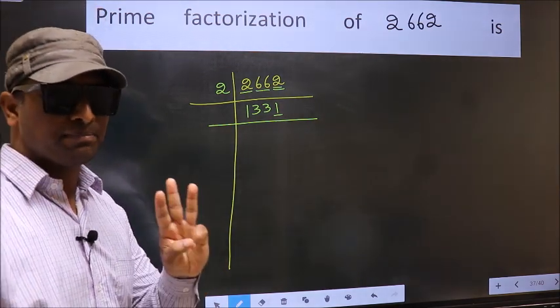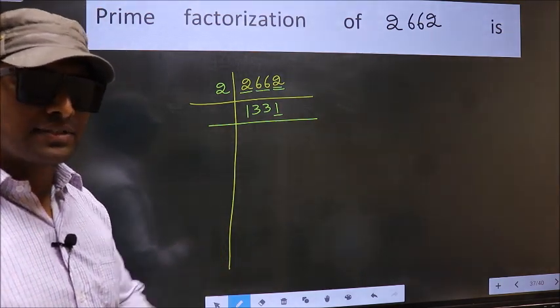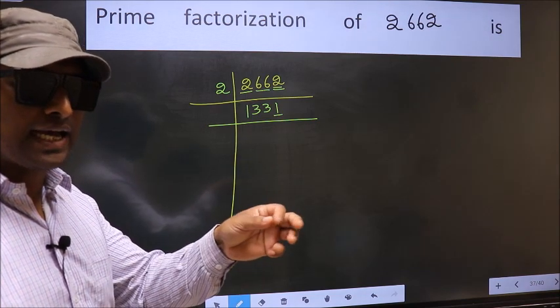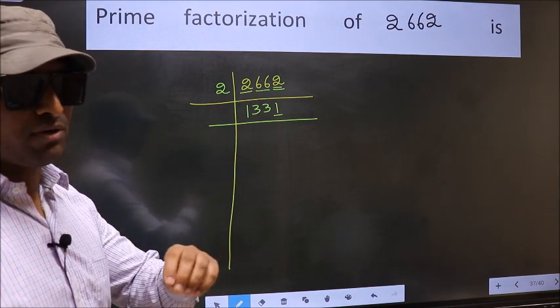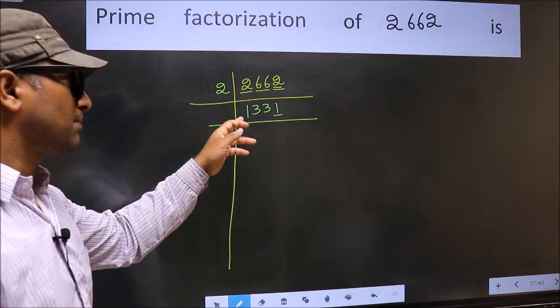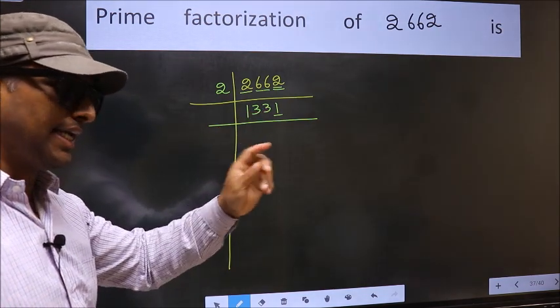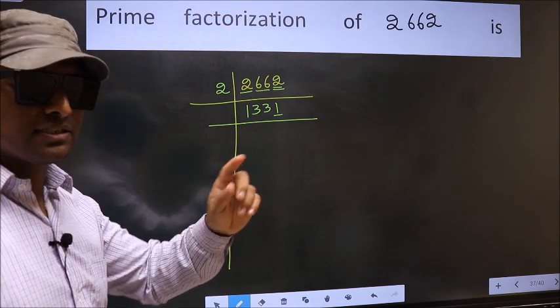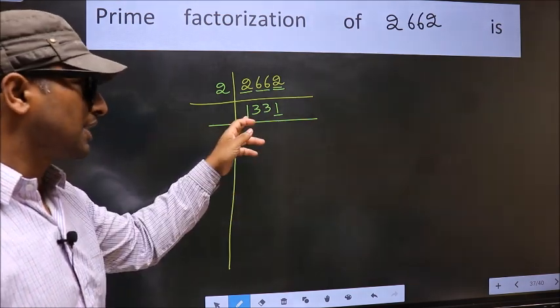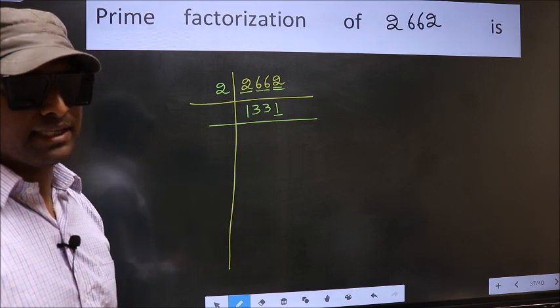Next, prime number 3. To check divisibility by 3, for that we should add the digits. What I mean is, 1 plus 3 plus 3 plus 1, we get 8. And 8 is not divisible by 3. So, this number also not divisible by 3.